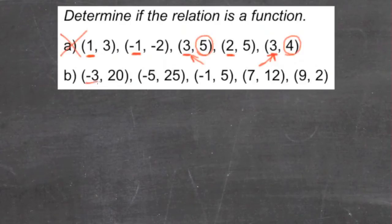For b, we're going to look through. We see we have a negative 3, a negative 5, a negative 1, a 7, and a 9. Those are all different x values, so it doesn't matter what the y values are, this is a function. So of the two, only b qualifies as a function.